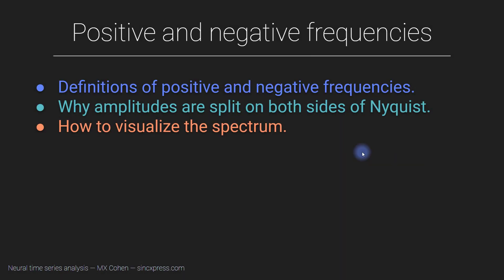In this video, I'm going to demystify a little bit more of the mysterious Fourier transform. In particular, I'm going to talk about the positive and negative frequencies, which sounds like weird terms, but you'll see it's not such a weird concept. And you will see why the amplitudes of a signal are split between the positive and the negative frequencies, which is also going to lead to a discussion about how to visualize the spectrum.